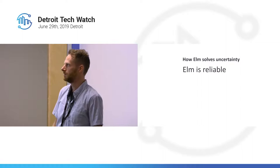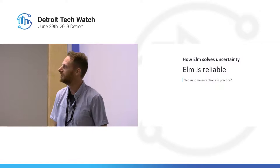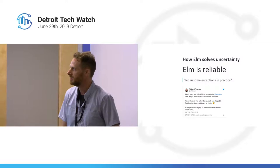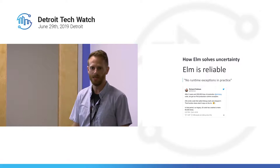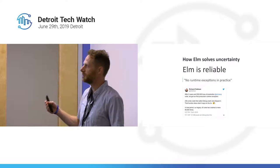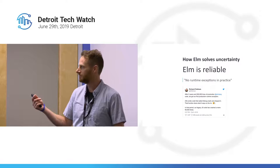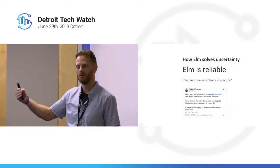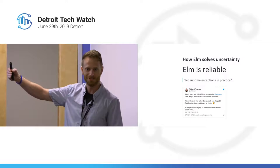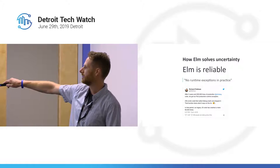How does Elm solve that? Well, it's reliable. This comes from the website: no runtime exceptions in practice. And here's an anecdote from Richard Feldman, a software engineer at NoRed Inc., who has one of the largest Elm code bases in production. After two years and 200,000 lines of production Elm code, they got one runtime exception — from a function that intentionally throws an exception if you call it. Meanwhile, their JavaScript crashed 60,000 times in that period. That's a stark difference.